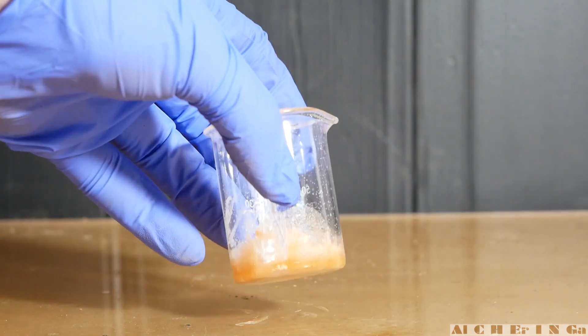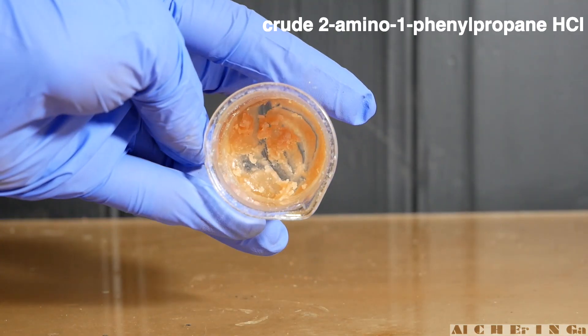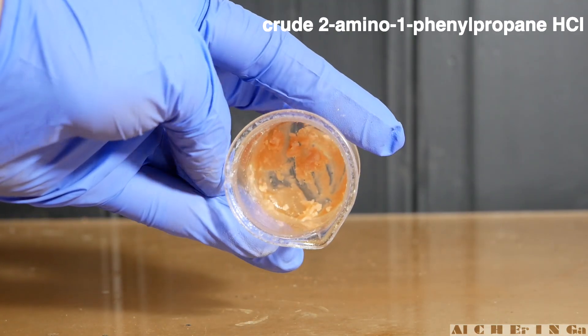As we can see, there is a light orange-pink crystalline material in the beaker. This should be our crude 2-amino-1-phenyl-propane hydrochloride.